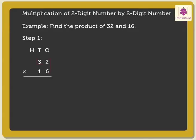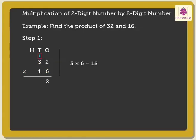Step 1. Multiply the multiplicand, that is 32, by the one's digit of the multiplier, that is 6. 2 into 6 is equal to 12. Now, 3 into 6 is equal to 18, plus the carried over 1 is equal to 19.